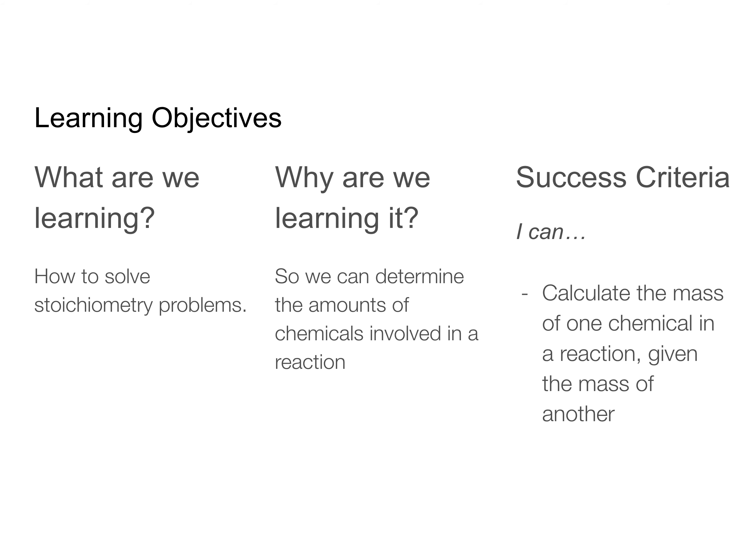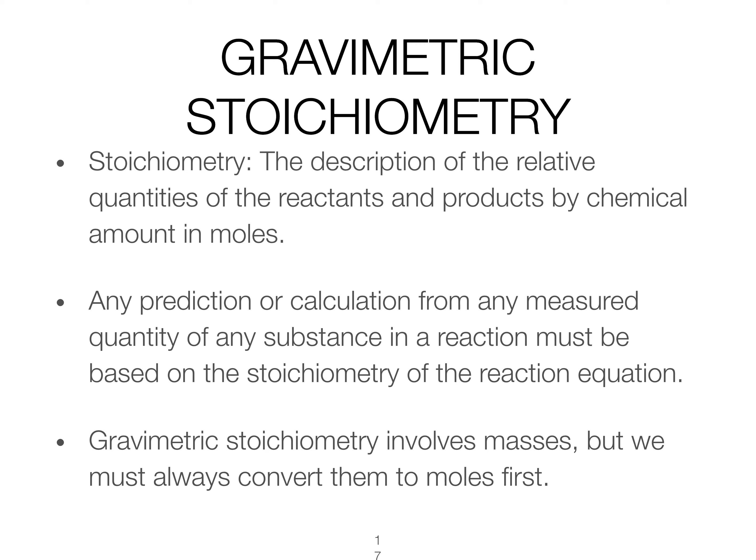Today we're talking about how to solve stoichiometry problems so we can determine the amount of chemicals involved in a reaction, and that objective is going to be the objective for all of this week's classes. The success criteria for this specific video is being able to calculate the mass of one chemical in a reaction based off of the mass of a different chemical in a reaction, and that specifically refers to a type of stoichiometry we call gravimetric stoichiometry.